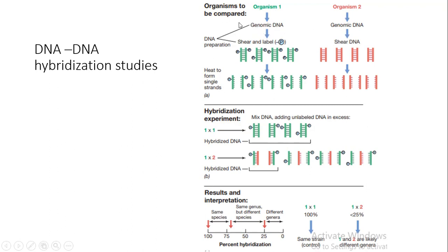Once we isolate the genomic DNA, the DNA is sheared and labeled. Shearing is done by different methods such as mechanical shearing or restriction enzymes, which lead to generation of smaller fragments of DNA.